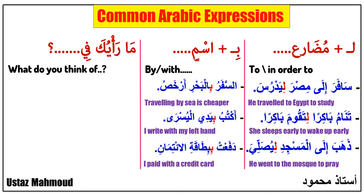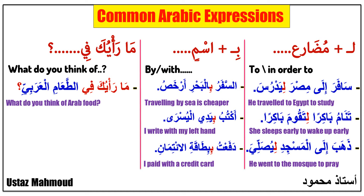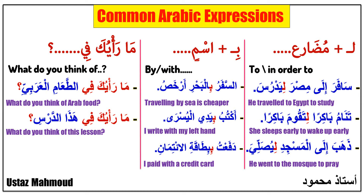Now let's move to the last expression we have today: 'Ma ra'yuka fi,' which means 'what do you think of.' 'Ma ra'yuka fi al-ta'am al-'Arabi' means 'what do you think of Arabic food.' Next sentence: 'Ma ra'yuka fi hadha al-dars' means 'what do you think of this lesson.' Please write your comment and your opinion about this lesson.